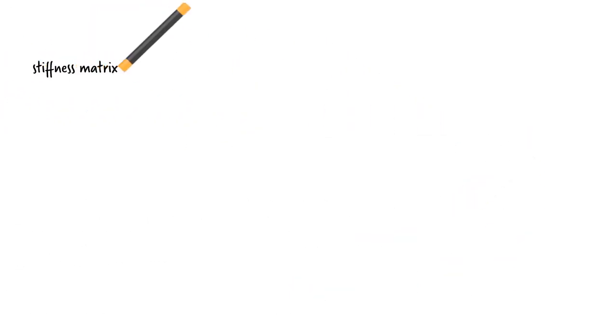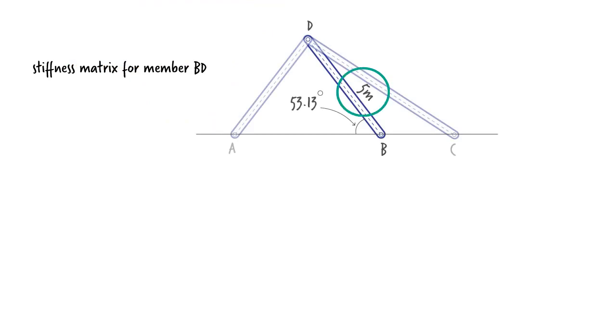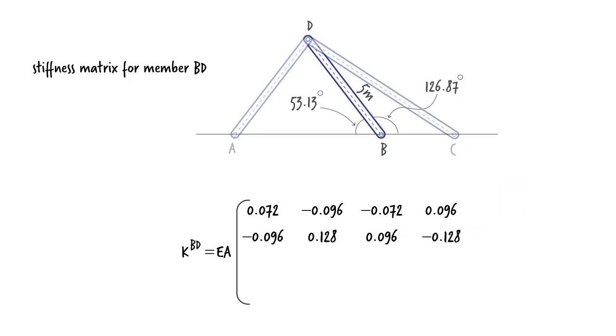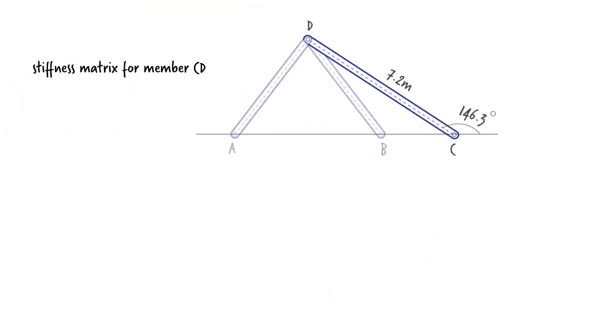For BD, L is 5 meters and the inclination angle is 180 minus 53.13 or 126.87 degrees. For CD, the member length is 7.21 meters and the inclination angle is 146.31 degrees.